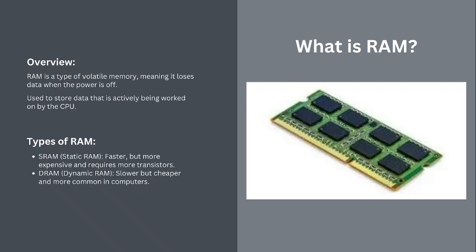RAM is volatile, which means it's like a whiteboard — as soon as you wipe it or turn off the power, it's gone. RAM is where your computer stores the stuff it needs right now. In terms of speed, it's fast, which is why it is so crucial for smooth performance. There are two flavors of RAM. Number one: Static RAM, SRAM, is like instant coffee — it's quick but a bit pricey. Number two: Dynamic RAM, DRAM, is like brewing your own coffee — takes a little longer but costs way less.